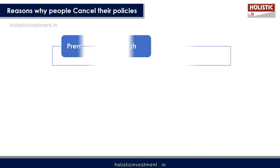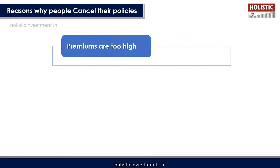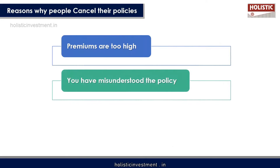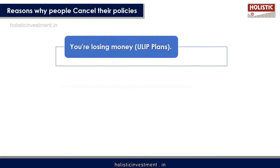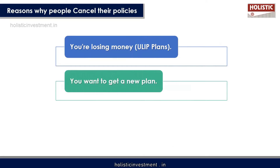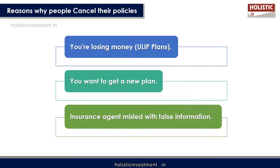The decision to cancel a life insurance policy can be based on a variety of reasons. You may not be able to afford high premiums due to financial problems. You may have misunderstood the policy, or believed it was beneficial but are no longer sure. You may have chosen a ULIP plan and are now losing money, or your insurance agent may have misled you with false information. The most common reason is misunderstanding the policy.